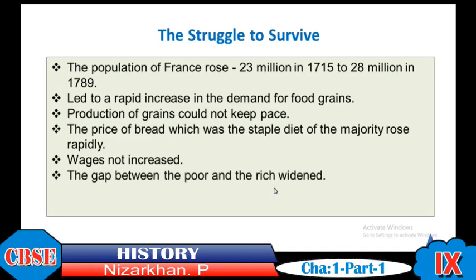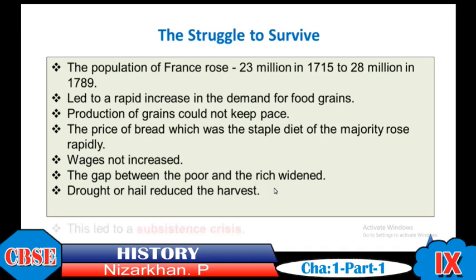Drought and hail further reduced the harvest, leading to a subsistence crisis — an economic crisis in which people faced extreme difficulty meeting their basic livelihood. This was the struggle to survive, the third factor that contributed to the French Revolution.